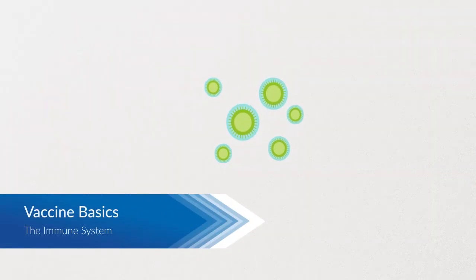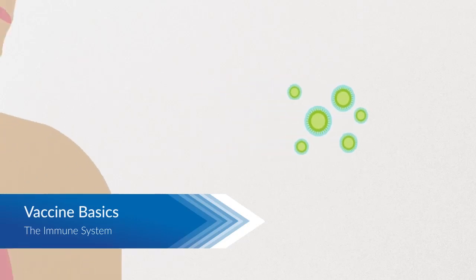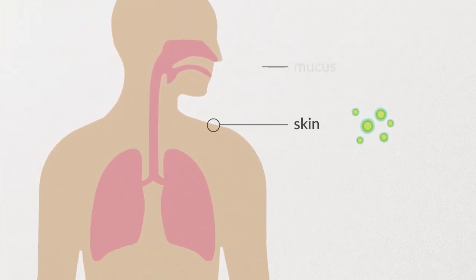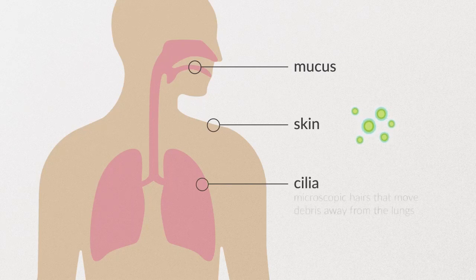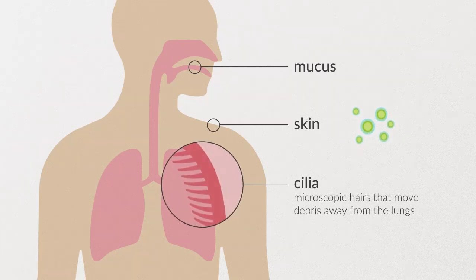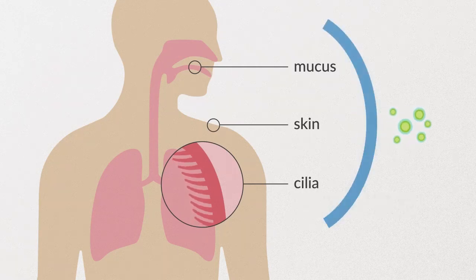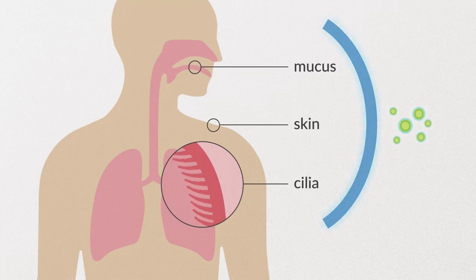The body has many ways of defending itself against pathogens or disease-causing organisms. Skin, mucus, and cilia — which are microscopic hairs that move debris away from the lungs — all work as physical barriers to prevent pathogens from entering the body in the first place.